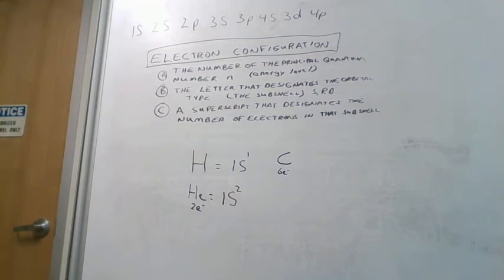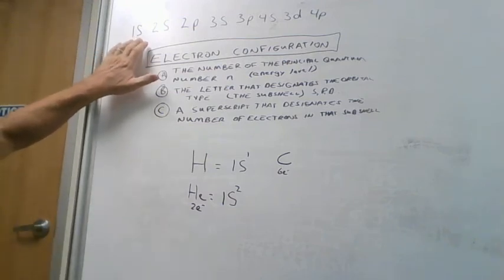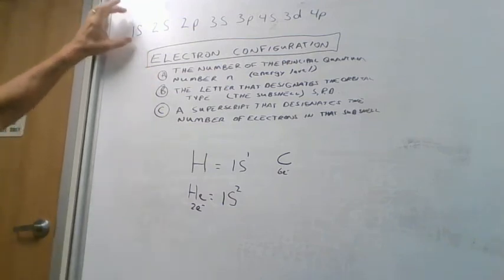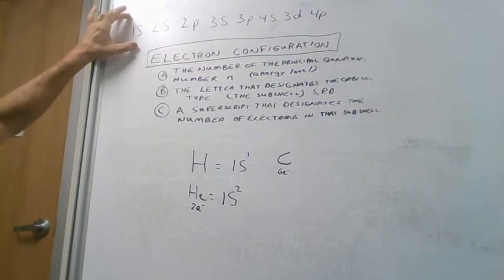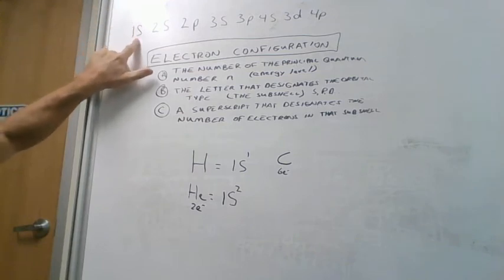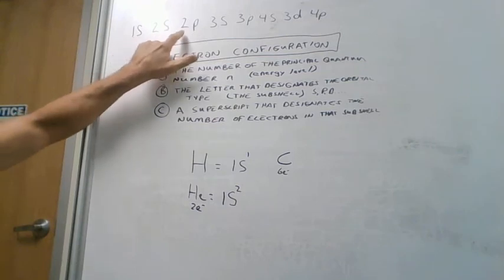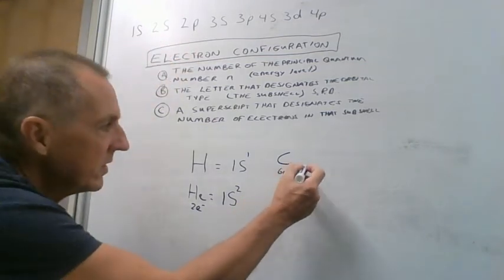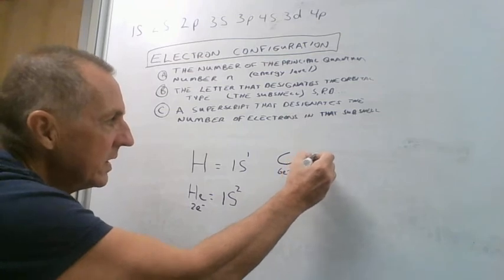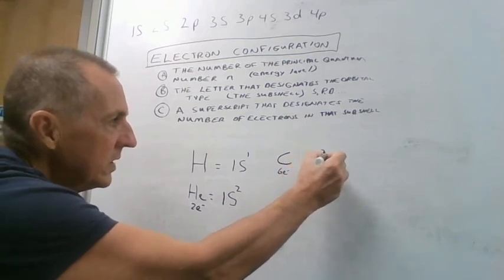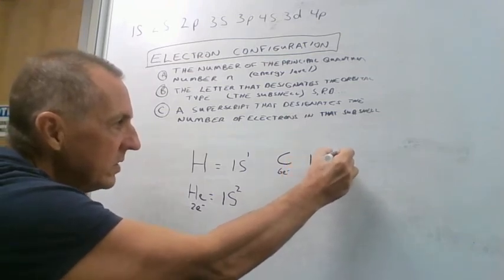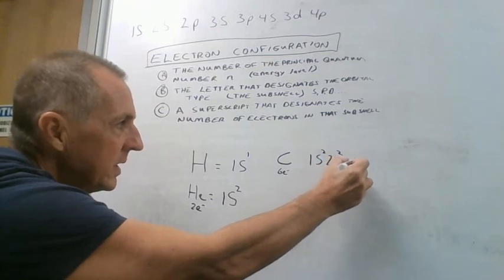So if we want to draw the electronic configuration, we have to say, well, where are those six electrons going to go? Each s subshell can only take two electrons, so the first two could go in this subshell. The second two could go in here, and we still have two more, so we'd have to put two in the next p orbital. So we would say we have 1s2, 2s2, and 2p2.